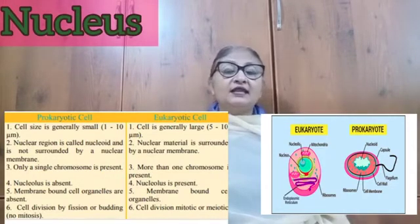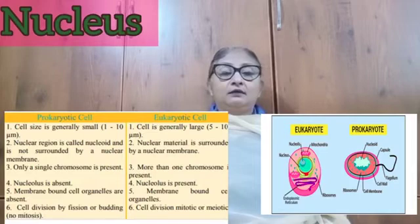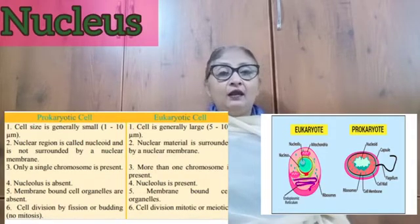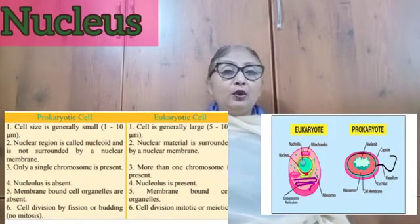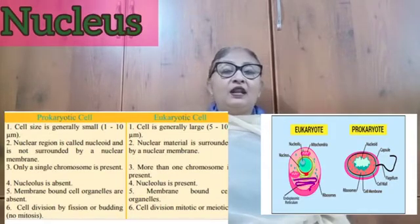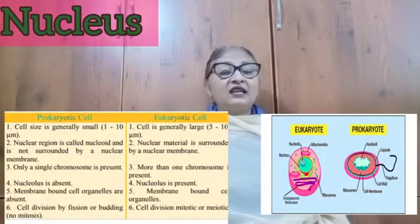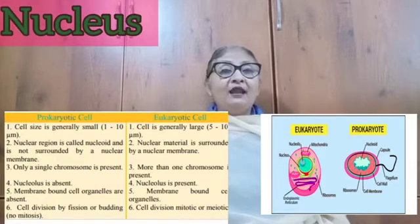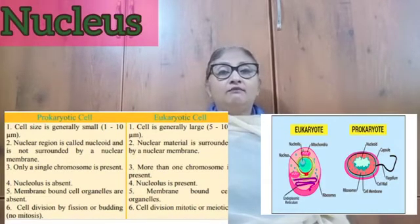In photosynthetic prokaryotic bacteria, the chlorophyll is associated with membranous vesicles, while in eukaryotes, chlorophyll is associated with membrane-bound cell organelles called plastids.